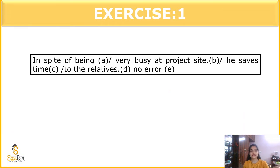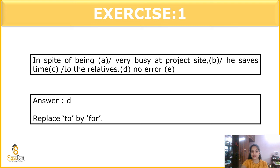The next question is, in spite of being very busy at project site, he saves time to the relatives. Here preposition is used, but it is wrong. Here we have to replace 'to' with 'for'. For someone means you are doing something for them. In spite of being very busy at project site, he saves time for the relatives.